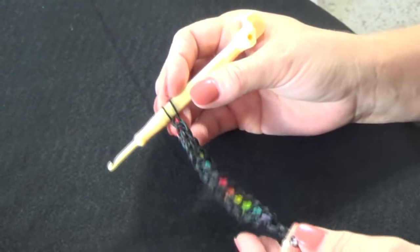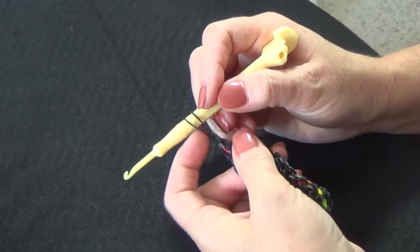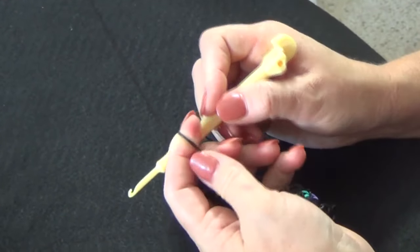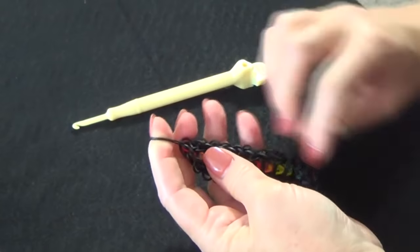Now that we've removed it from the loom, you'll pull it down from your hook. Put two fingers in there. Pull those apart.